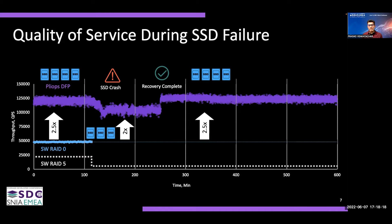When we pulled an SSD out of the RAID configuration with DFP enabled, performance dropped from 125,000 to 100,000 queries per second — around a 15 to 20% drop. However, this performance during recovery operations is still 2x higher than RAID 0 without data protection. With normal sustained performance, we get around 2.5x higher performance than software RAID 0, and during recovery operations with drive fail protection, we get 2x higher performance than software RAID 0.